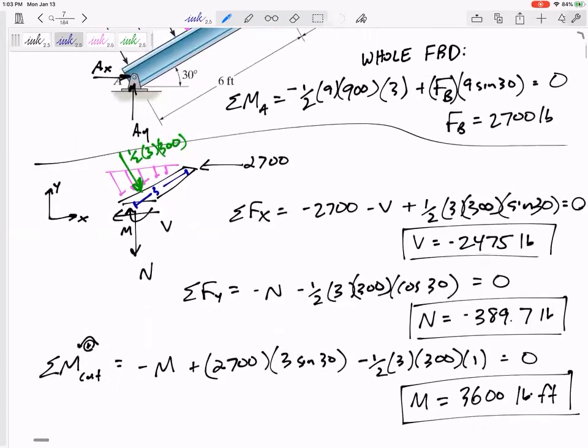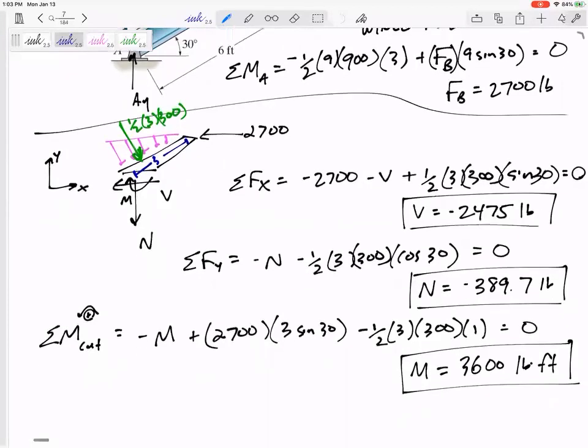All right, and so because I had already solved for everything else, N, V, and M were my three unknowns. So I solved for N, V, and M right there. I think I'm going to get that pool noodle. So y'all look at that one.